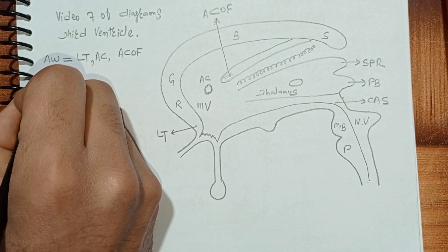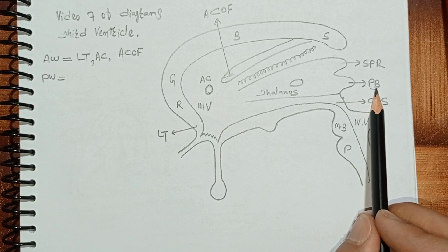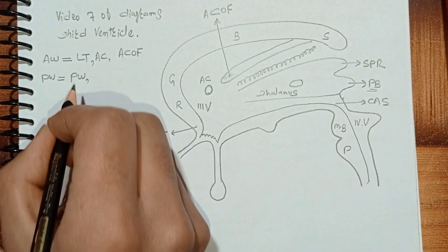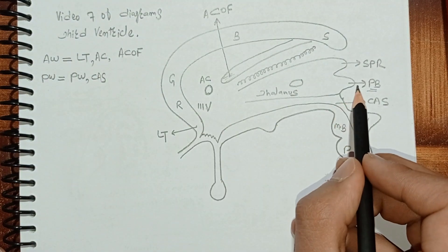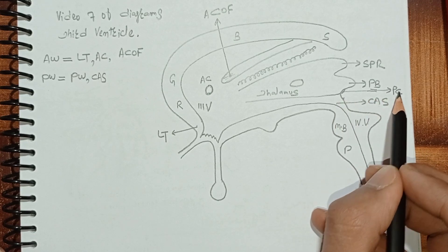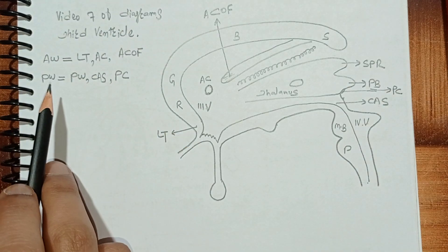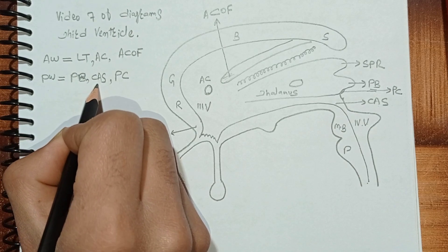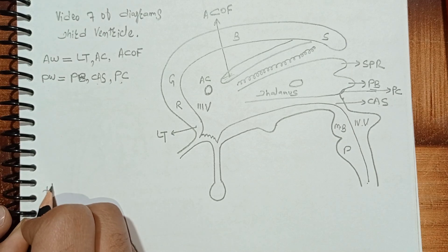Now I will name the structures in the posterior wall of the third ventricle. The posterior wall is formed by three structures: number one is the pineal body; number two is the cerebral aqueduct of Sylvius, which connects the third ventricle with the fourth ventricle; and below the pineal body we have the posterior commissure. So the posterior wall is formed by the pineal body, the cerebral aqueduct of Sylvius, and the posterior commissure.